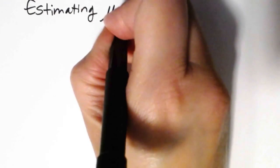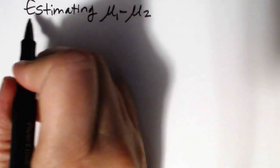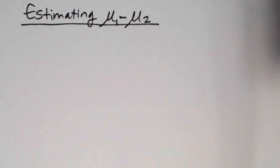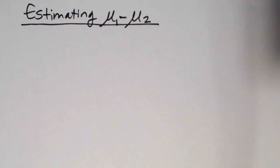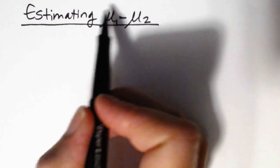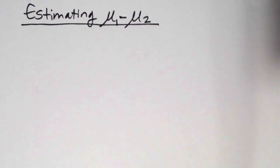In this video we're going to be looking at estimating the difference between two population means — estimating mu1 minus mu2. There will also be a separate video looking at estimating the difference between two population proportions rather than two population means, so here we're focused on the means.